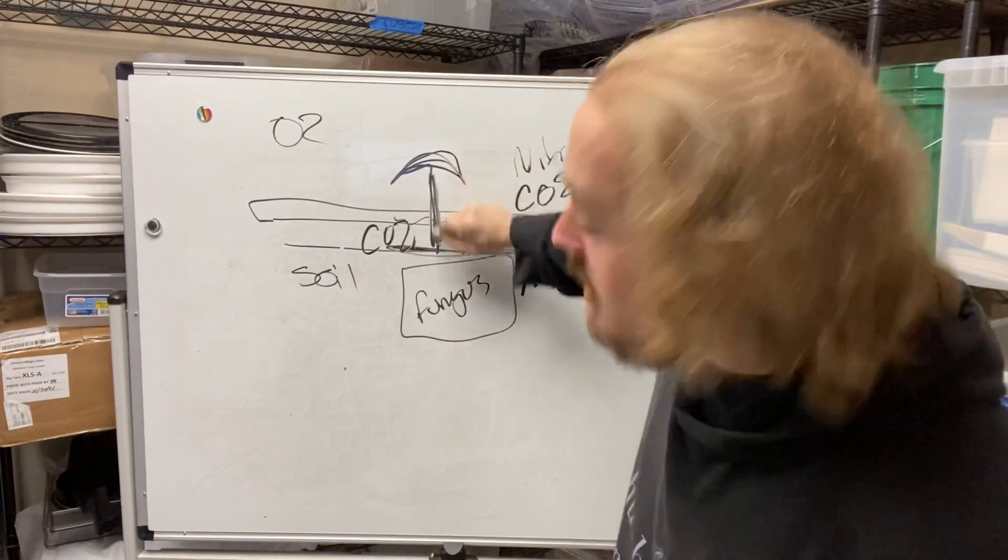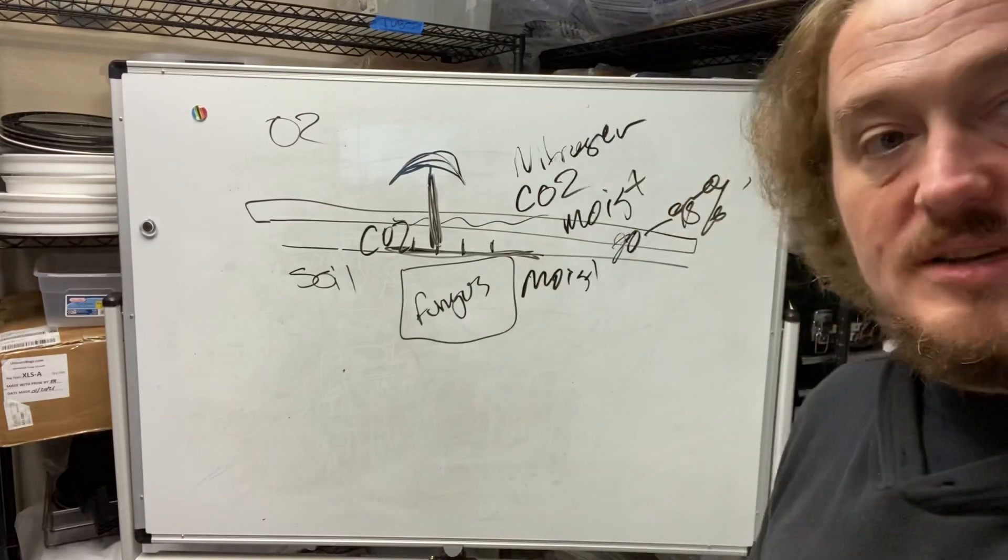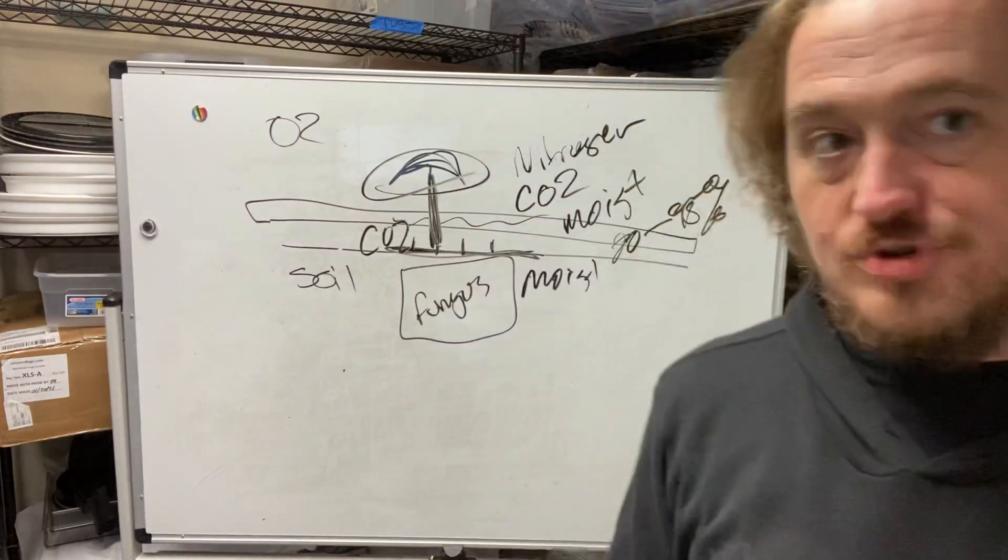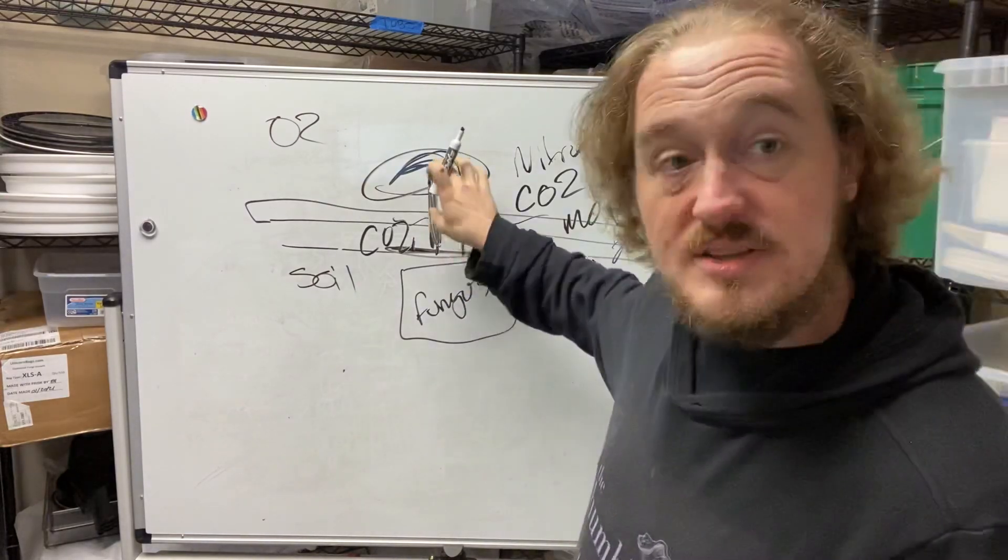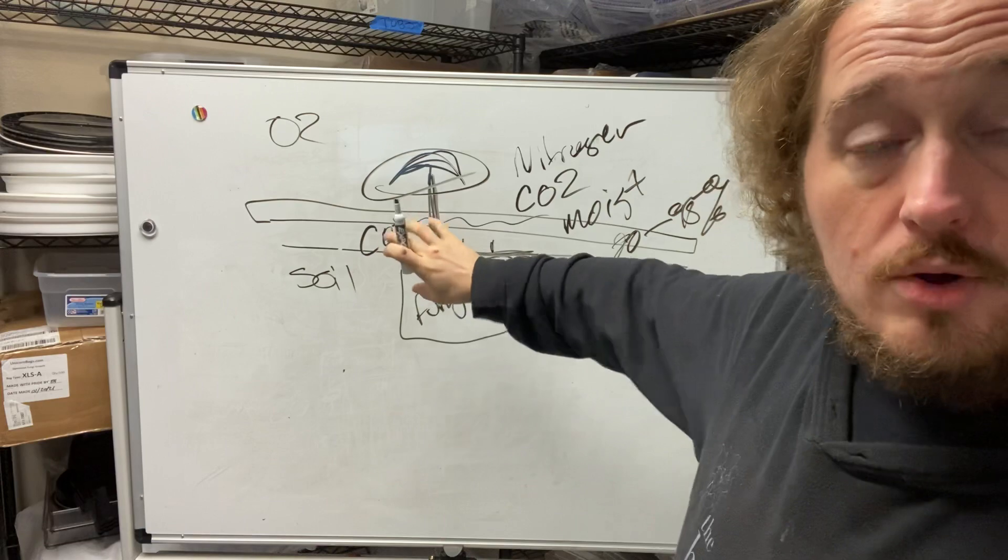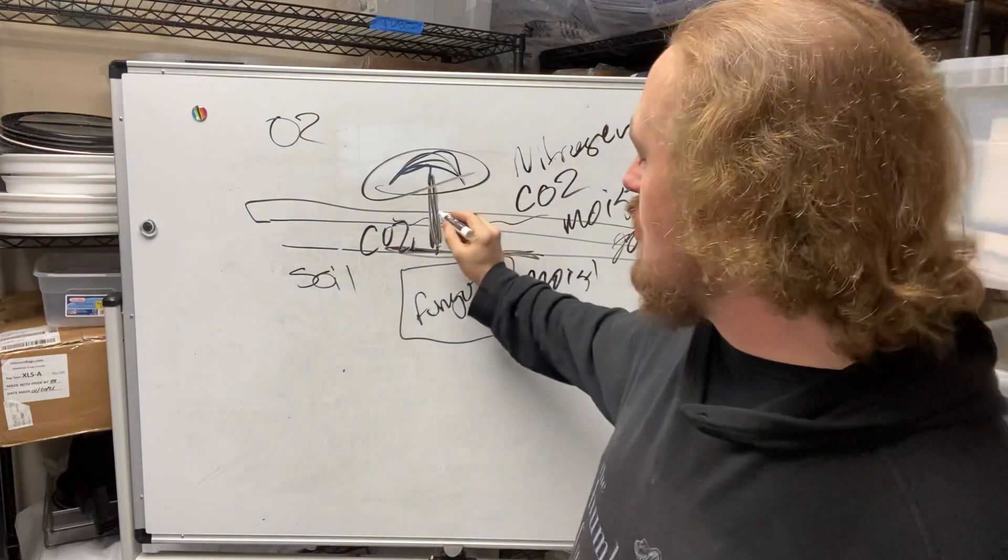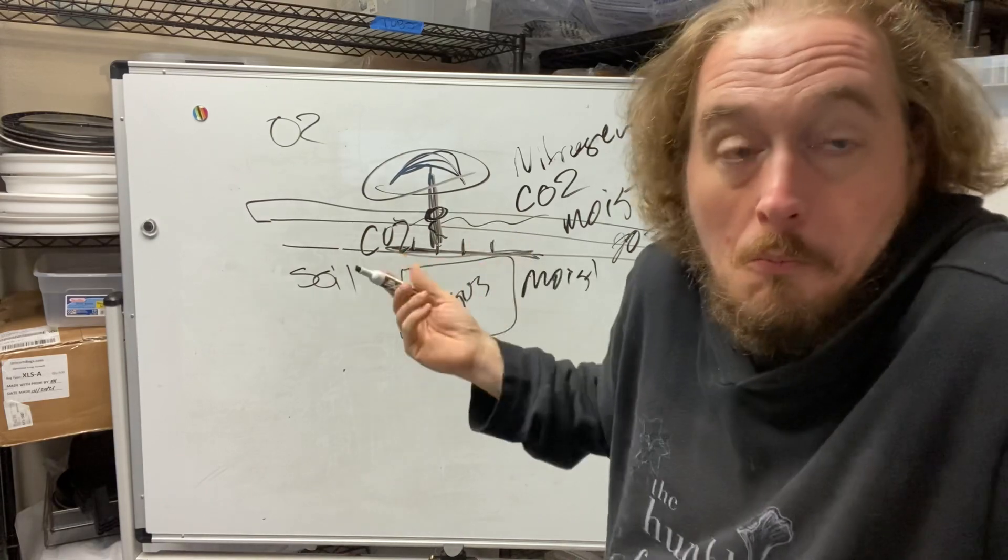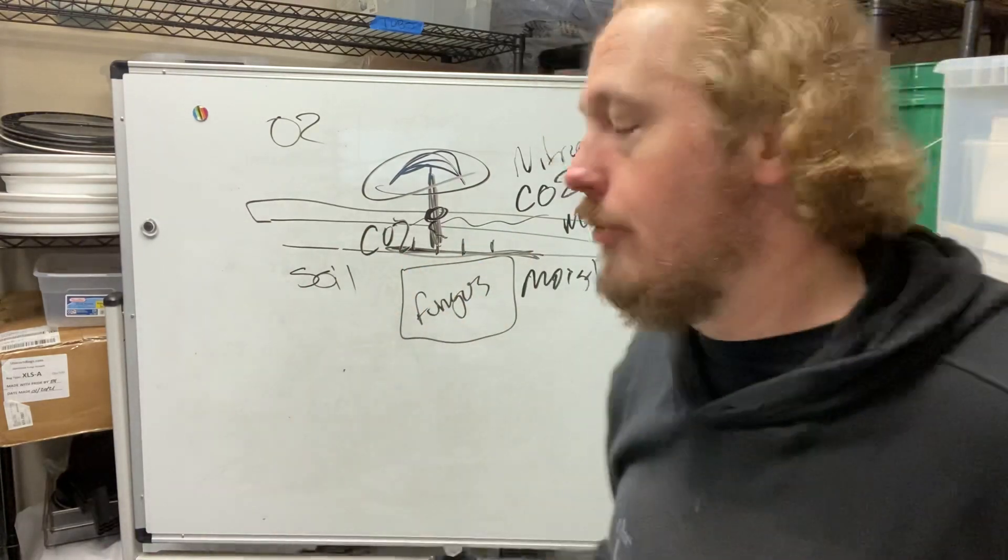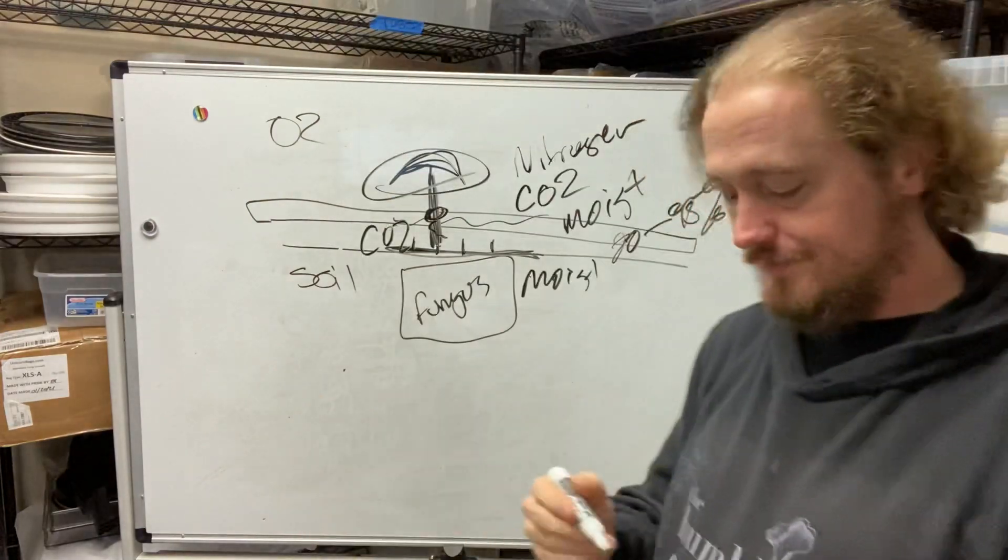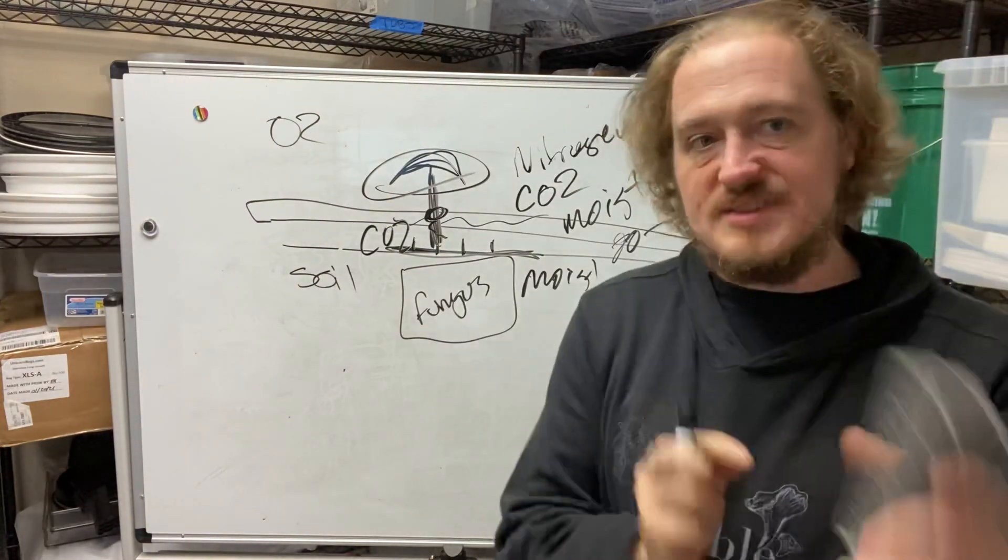Because the stem is what separates the spores, which are located here in the cap usually, separates the spores from the high CO2, low ground environment. In other words, if it were to spread its spores right here, they wouldn't go anywhere. They just fall right here. They're going to be caught up by the wind and blown all over the place.